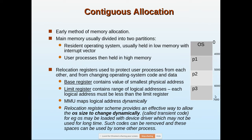The base register contains the value of the smallest physical address — physical address being the main memory address. For example, for process P1, if the operating system occupies up to address 4000, then P1 starts at 4001, so 4001 is in the base register. The limit register holds the size of the range — say 1000, meaning P1 spans from 4001 to 5000, covering 1000 memory addresses.